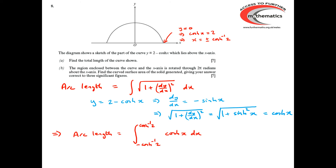So the arc length is the integral between −cosh⁻¹(2) and cosh⁻¹(2) of cosh x. Integrating cosh x gives sinh x. When we put the limits in using a calculator, we get the value 3.46 for the arc length.